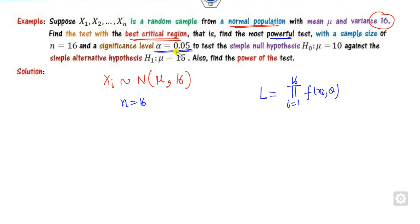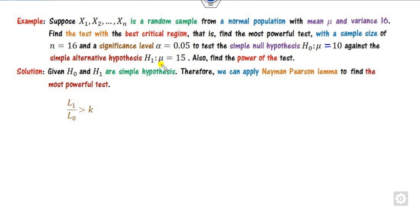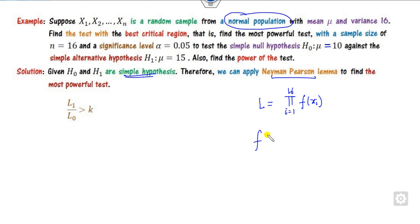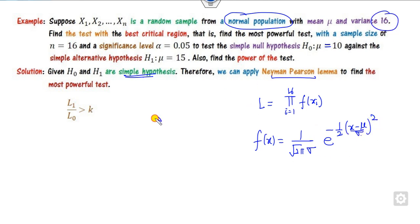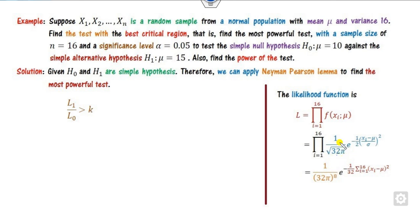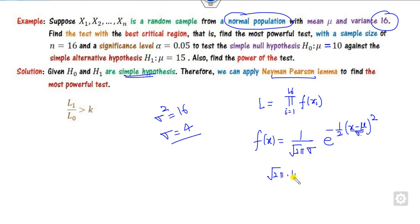H0 and H1 are both in equality form, so it is a simple hypothesis and we can apply the Neyman-Pearson lemma. First, define the likelihood function: L = product from i=1 to 16 of f(xi). For the normal distribution, f(x) = (1/√(2πσ)) × exp(−½((x − μ)/σ)²). Since variance = 16, σ = 4. Substituting, the denominator becomes √(32π). Taking the constant outside, we get (√(32π))^16 = (√(32π))^16, and the exponent becomes a summation term divided by 32.